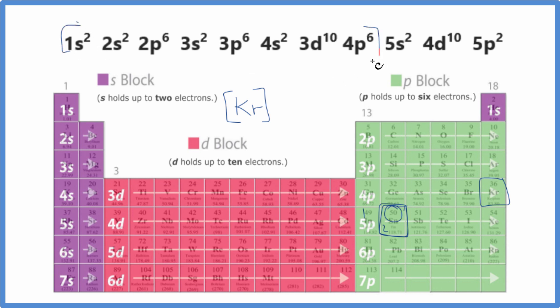If we count 36 electrons, this right here would be the electron configuration for Krypton. So all we have to do is add this part right here on the end. So we have Kr, and this is the condensed electron configuration for Tin.